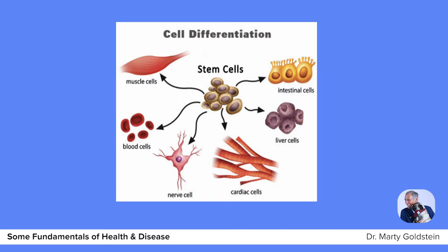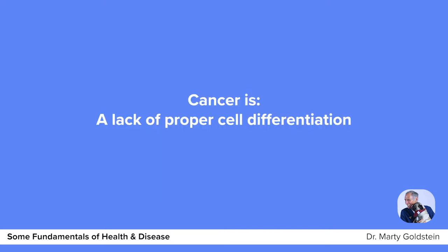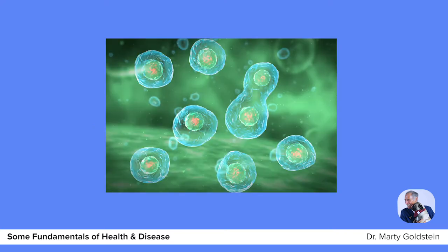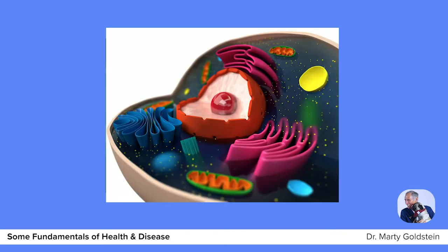Then we have a miracle of nature called cellular differentiation, where a stem cell — nature knows how to create muscle cells, intestinal cells, eyeballs, heart, and brain out of the same stem cell. Cancer is, very simplistically stated, a lack of proper cell differentiation. So cells that are going to become normal bone, because of an immunological foul-up, become bone tumor cancer. Cells that are supposed to become normal brain all of a sudden turn into a brain tumor. On a very simplistic level, it's not more complicated than that.